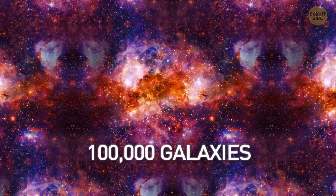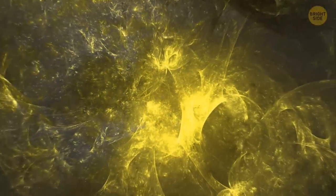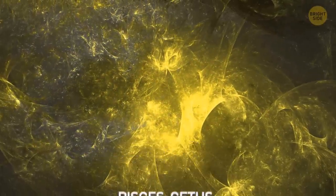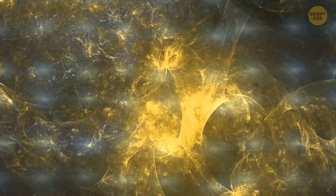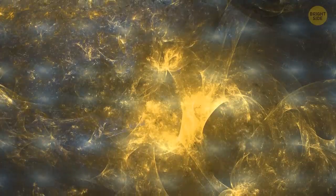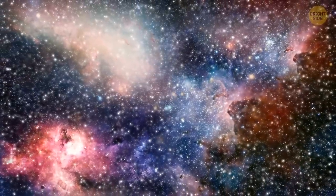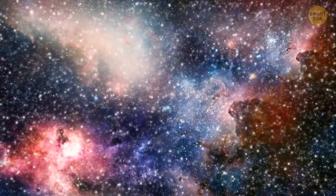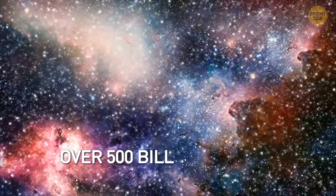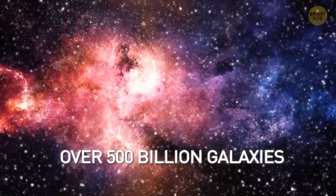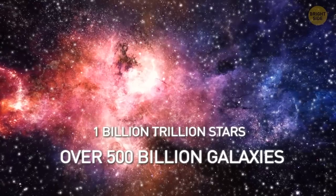It's not over yet. Zoom out one more time. Here's the Pisces Cetus supercluster complex. This giant galactic structure contains about 60 clusters of galaxies. So there are more galaxies in it than grains of sand in the desert. You know what to do. Zoom out. This is the observable universe. There are over 500 billion galaxies. And the stars? Well, there are about 1 billion trillion stars.